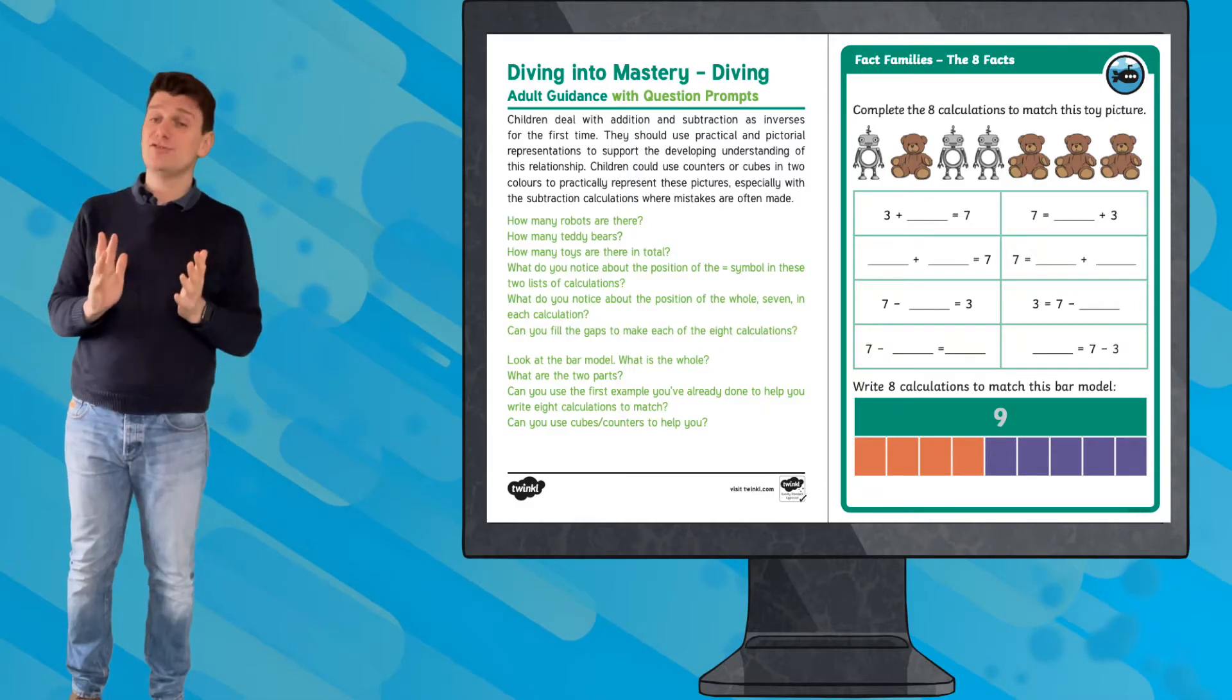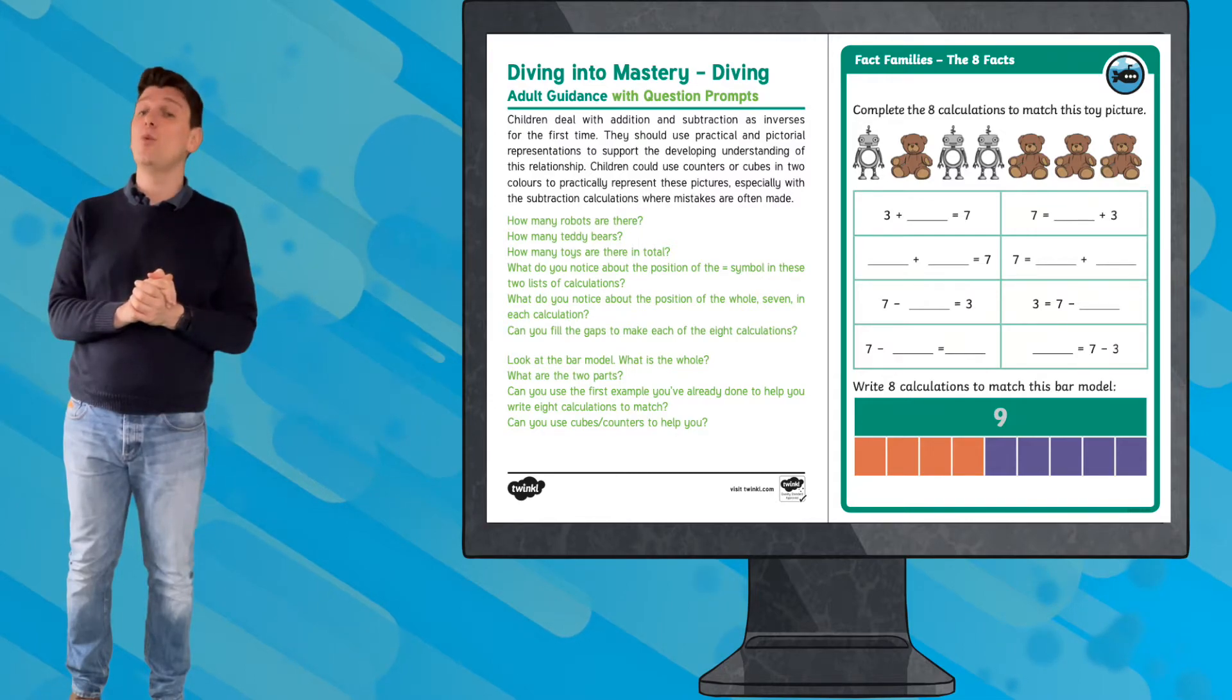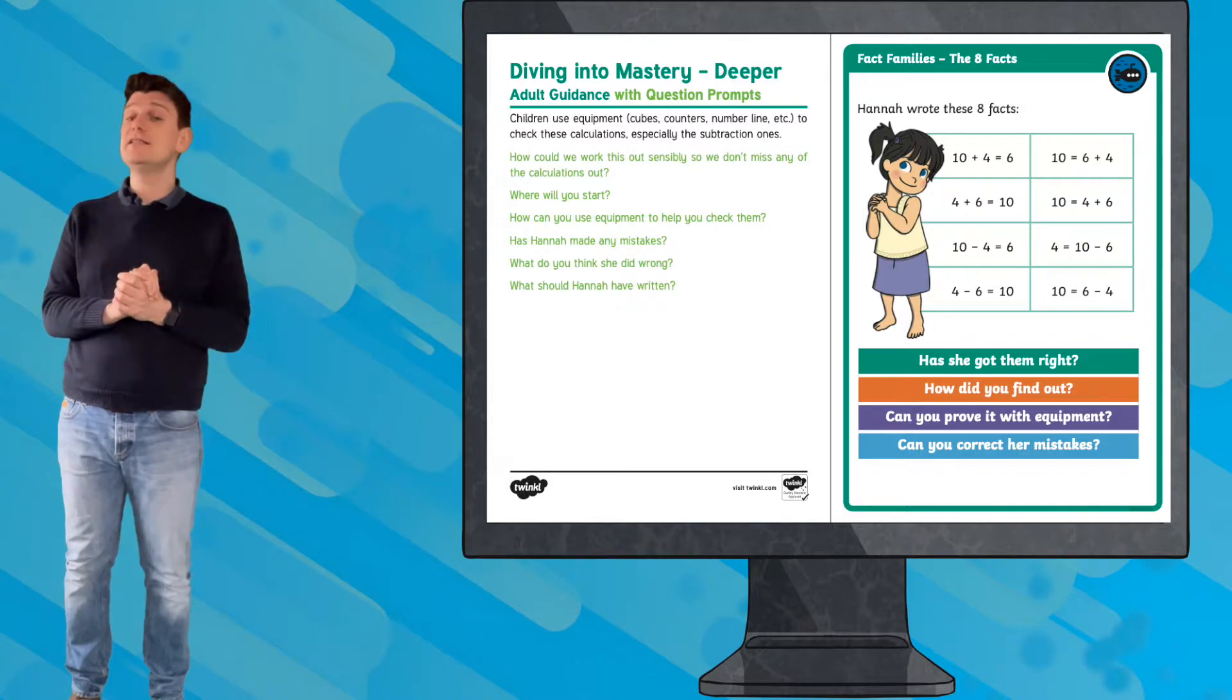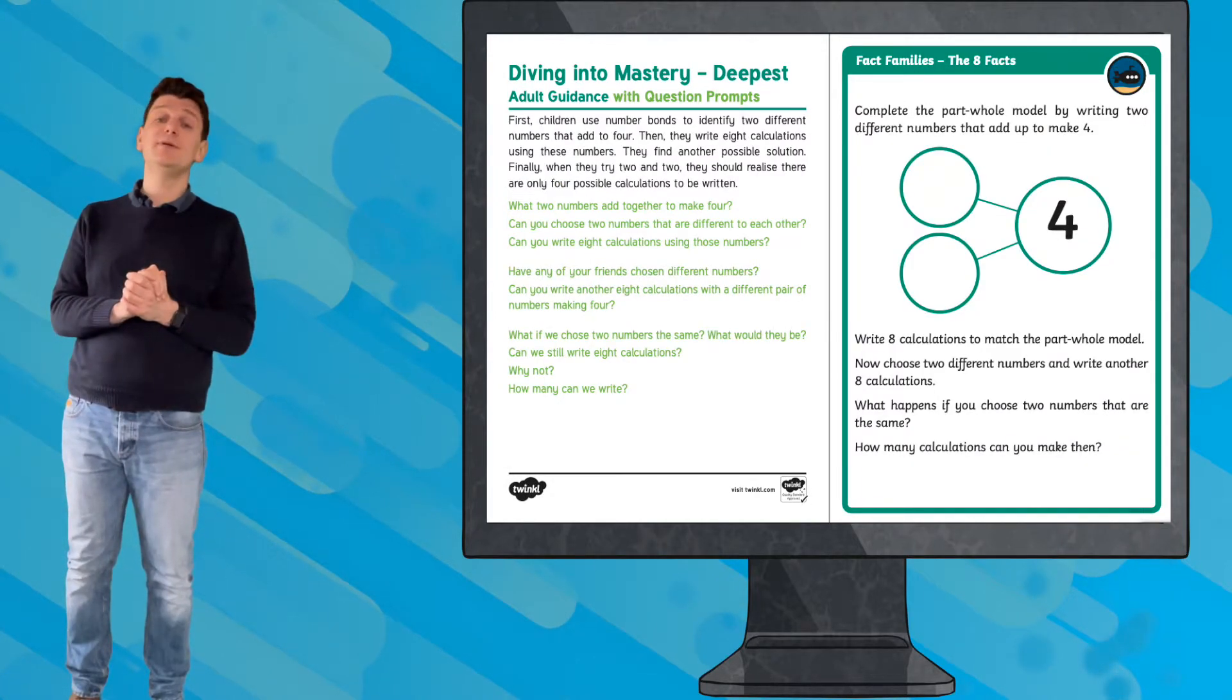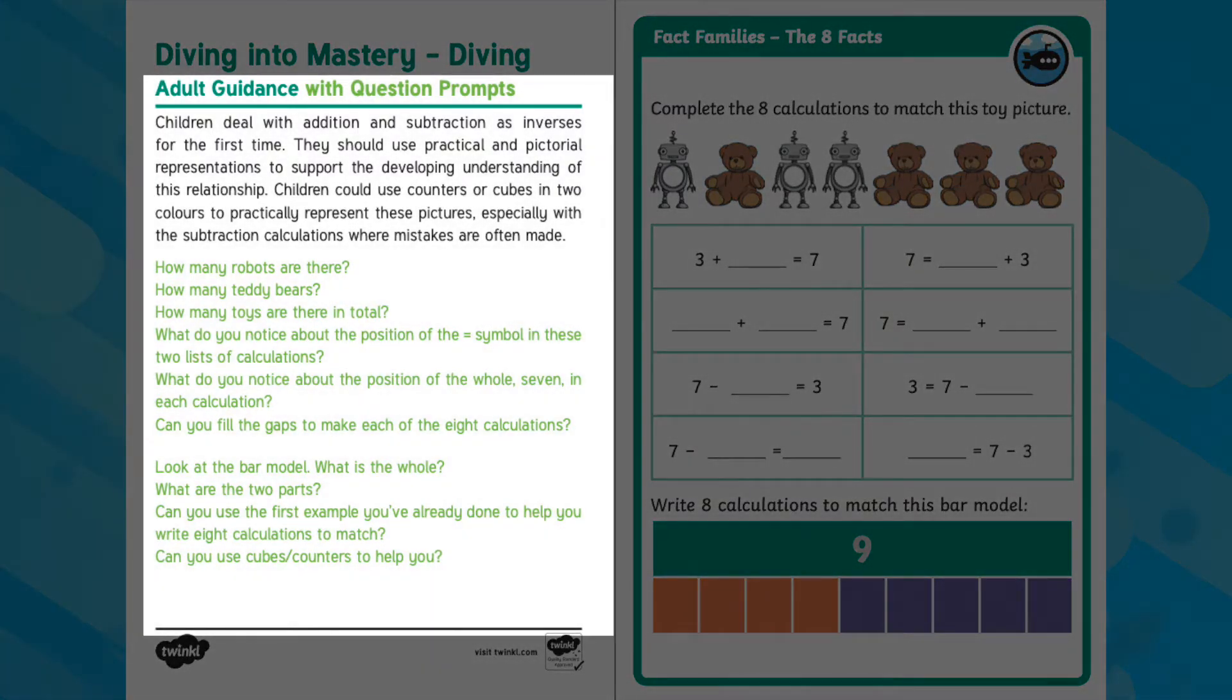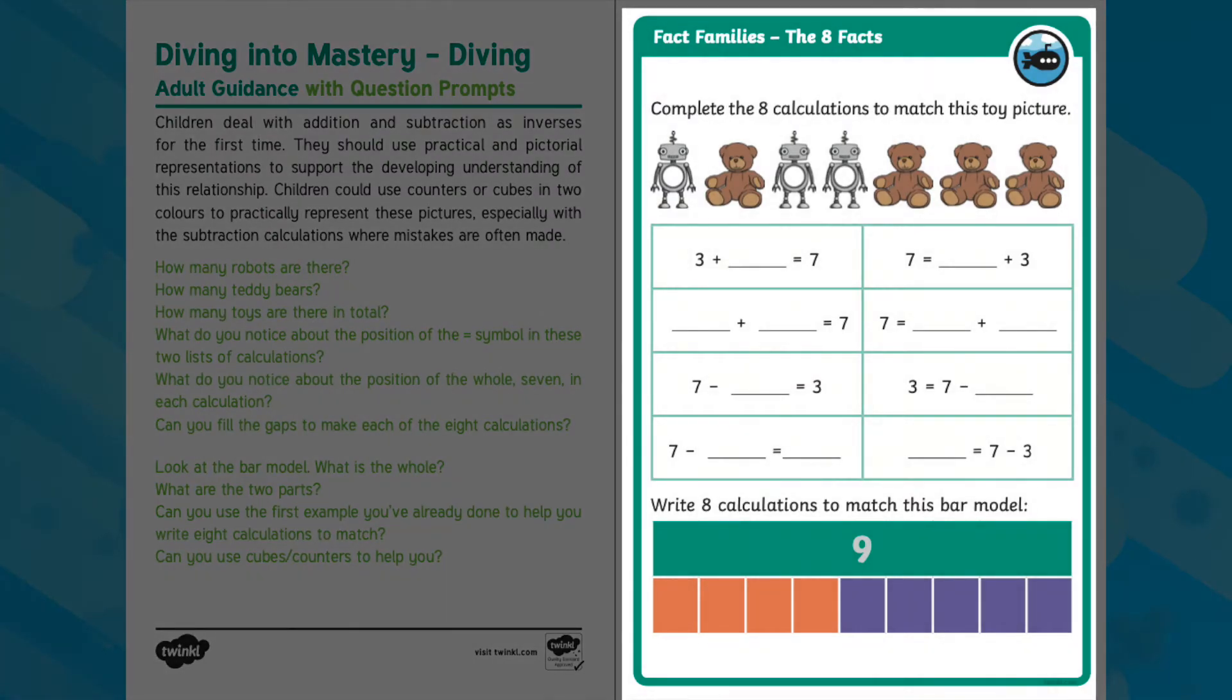These maths mastery cards, written to support the Year 1 White Rose Maths Small Step Fact Families 8 Facts, are a great way to develop children's understanding of the links between addition and subtraction. The cards include clear guidance and question prompts for adults, and some exciting recorded or practical activities for children that use a variety of models and images to help support learning.